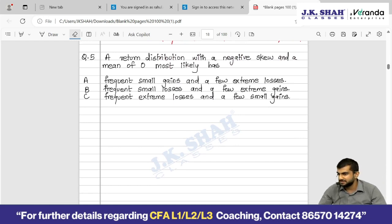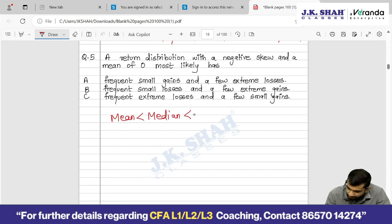Let's understand how to solve such questions. Negative skew. You remember the concept of skewness? In negative skew, mean is less than median and median is less than mode. And why is mean negative? Because of outliers. Outliers mean negative means losses or gains? Losses. Few extreme losses. Extreme means outliers. So few extreme losses and frequent small gains.